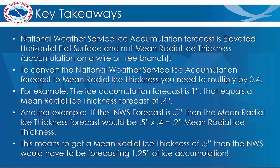The key takeaway is that the National Weather Service official ice accumulation forecast is based on elevated horizontal flat surface, not mean radial ice thickness. To get the mean radial ice thickness, you need to multiply the National Weather Service ice accumulation forecast by 0.4 to get the equivalent mean radial ice thickness accumulation.